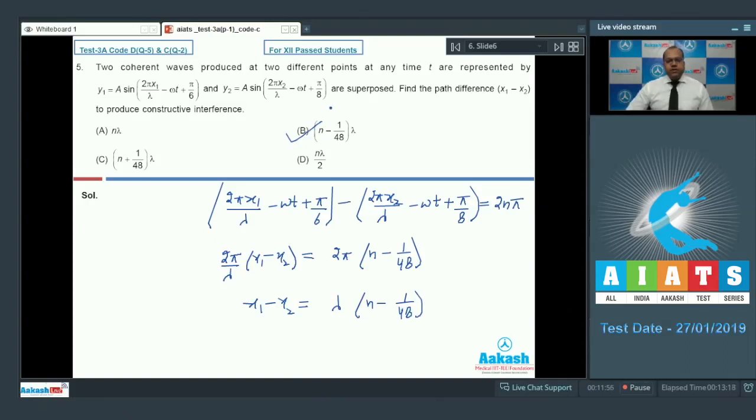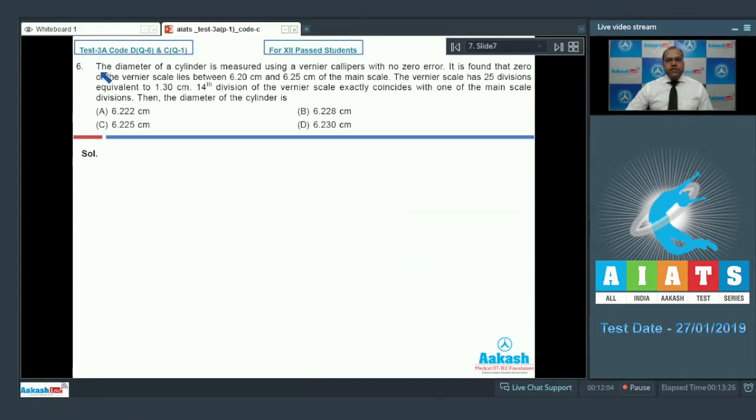Let's move to question number 6. The diameter of a cylinder is measured using a vernier caliper with no zero error. It is found that zero of the vernier scale lies between 6.20 cm and 6.25 cm of the main scale. It means that the least count of the main scale is equal to 0.05 cm.